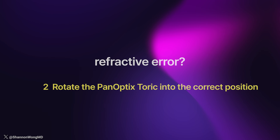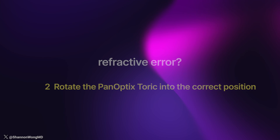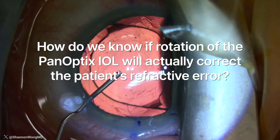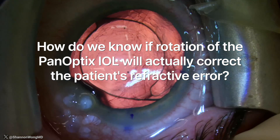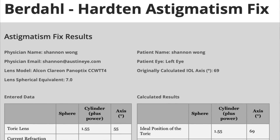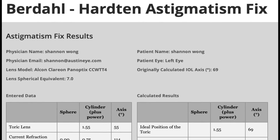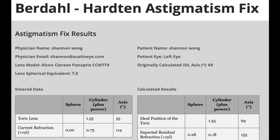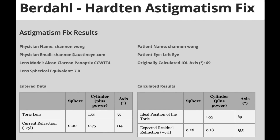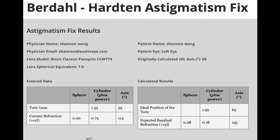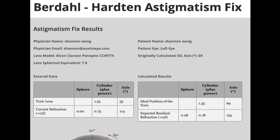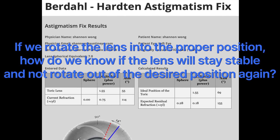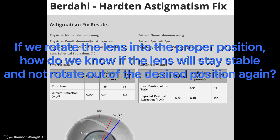We chose option two — to rotate the Panoptix Toric lens the following day. To confirm that rotation will correct the residual refractive error, I used the calculator on astigmatismfix.com, which shows that if we rotate the existing Panoptix Toric to the correct axis of 69 degrees, his residual refraction will be plus 0.25 plus 0.18 at axis 155. But if we rotate the lens into proper position, how do we know it will stay stable?